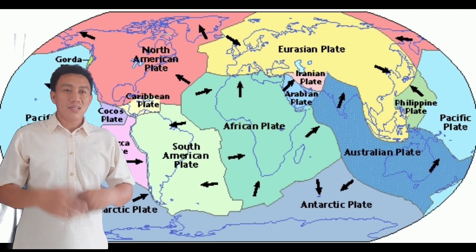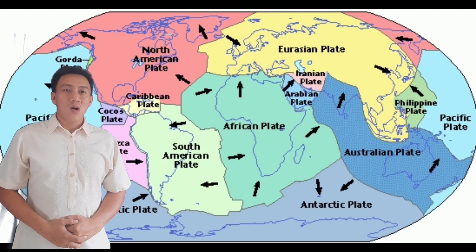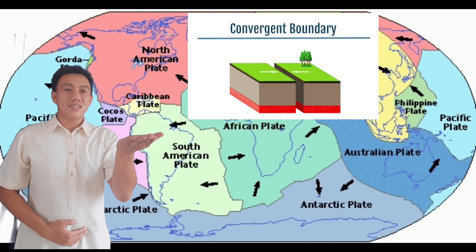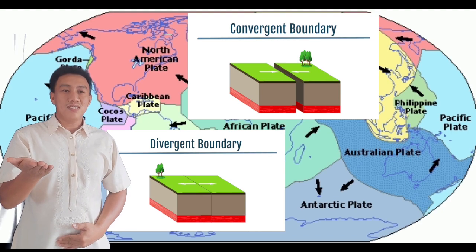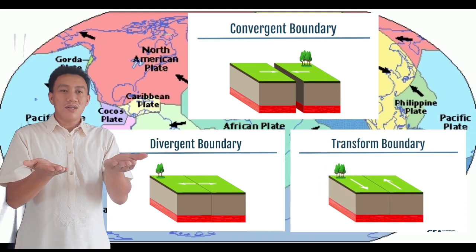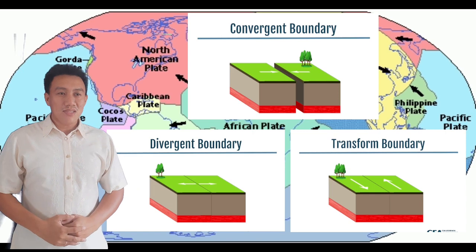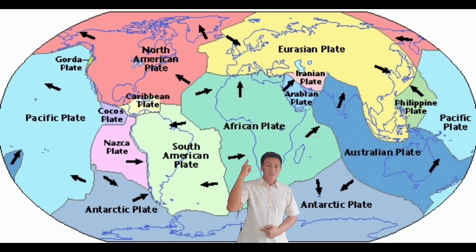Now let's go to the types of plate boundaries. There are three types of plate boundaries. We have the convergent plate boundary, when two plates move towards each other. And lastly, we have the transform fault boundary, where two plates slide past each other. When we say boundary, it is a dividing line — as you can see on the picture, it separates the plates.